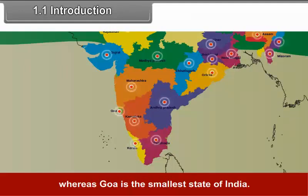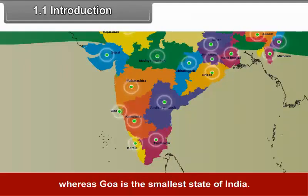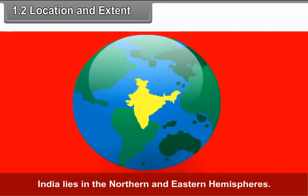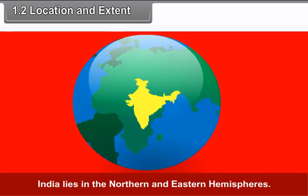Rajasthan is the largest state in terms of area, followed by Madhya Pradesh and Maharashtra, whereas Goa is the smallest state of India.